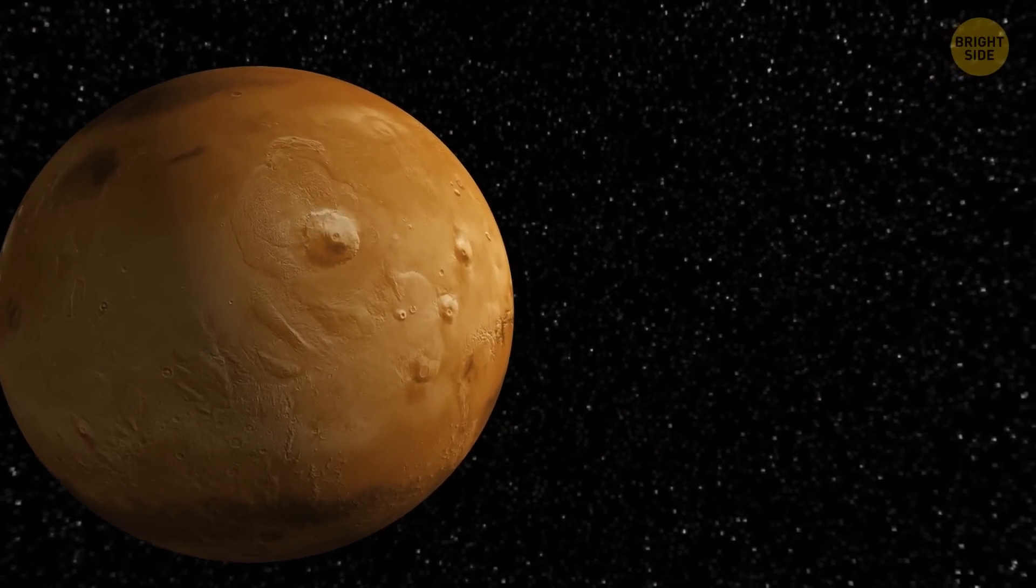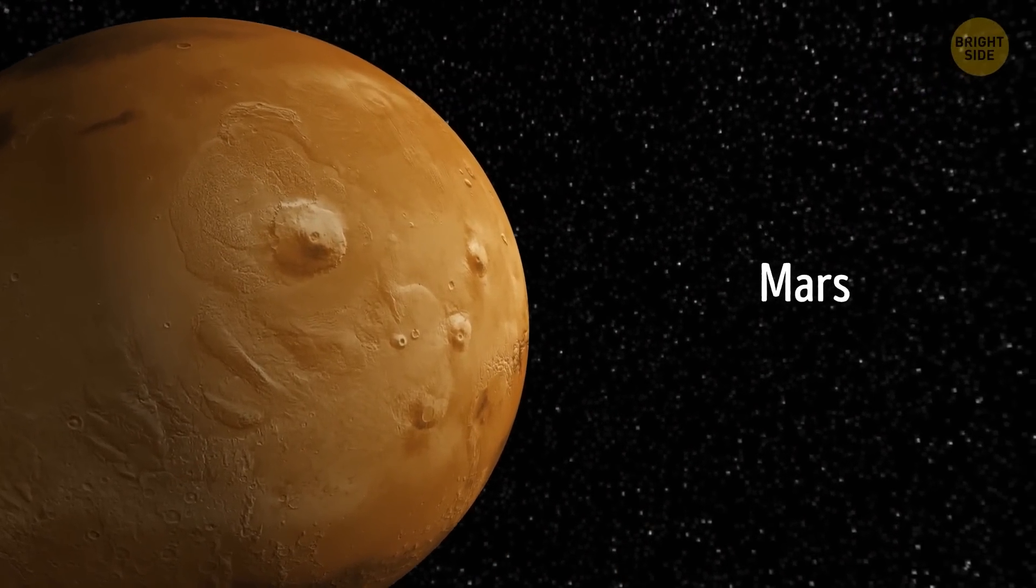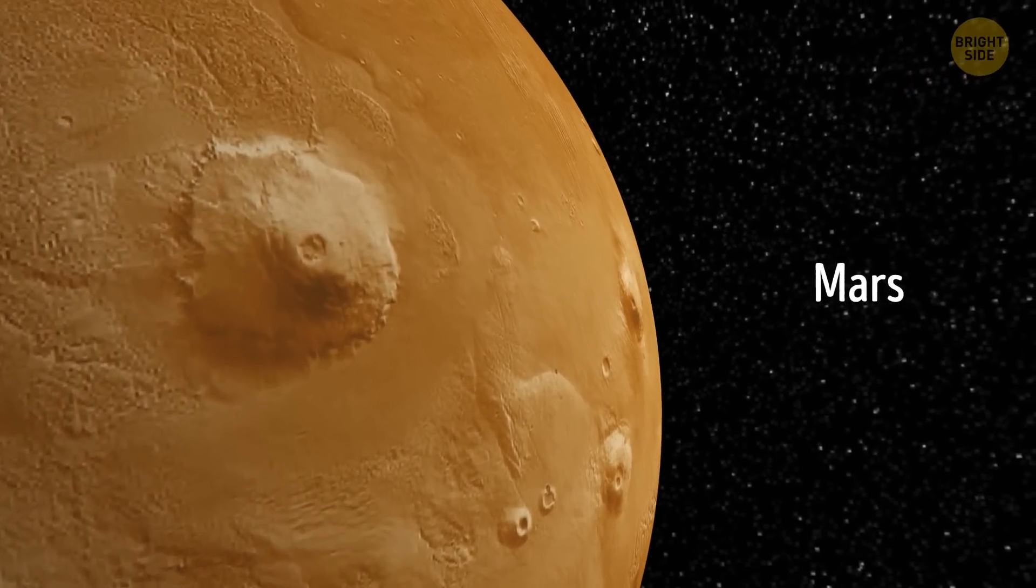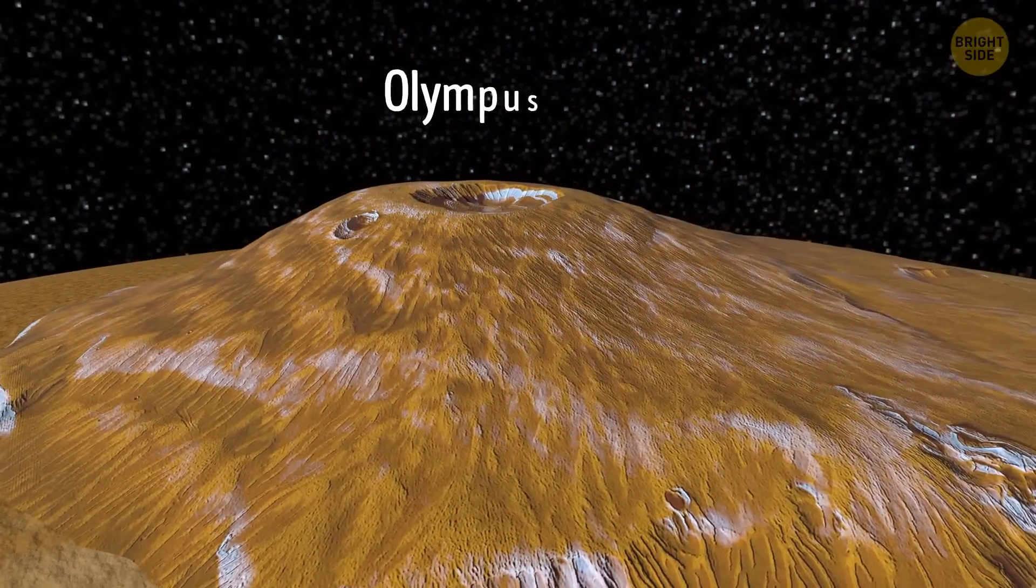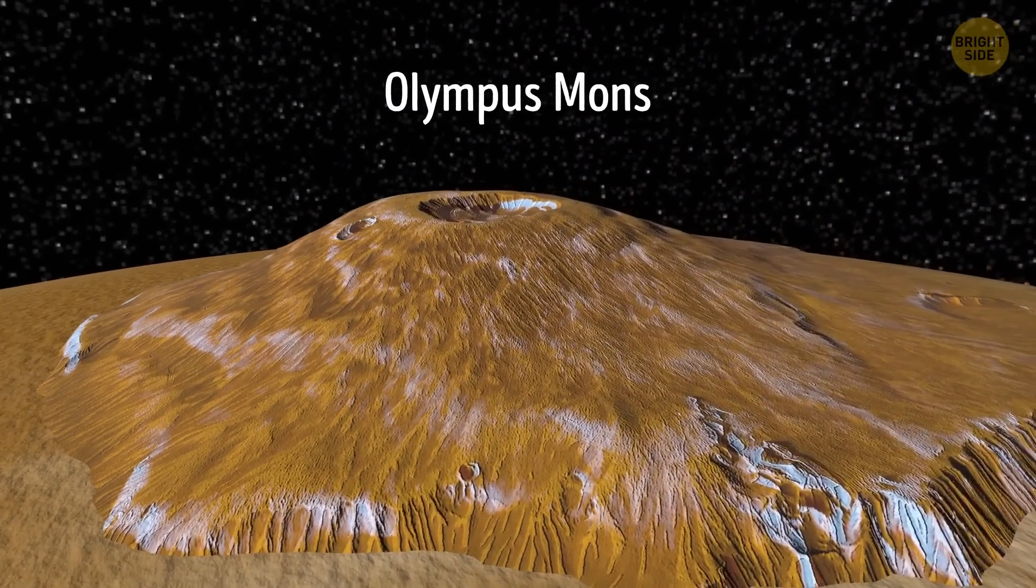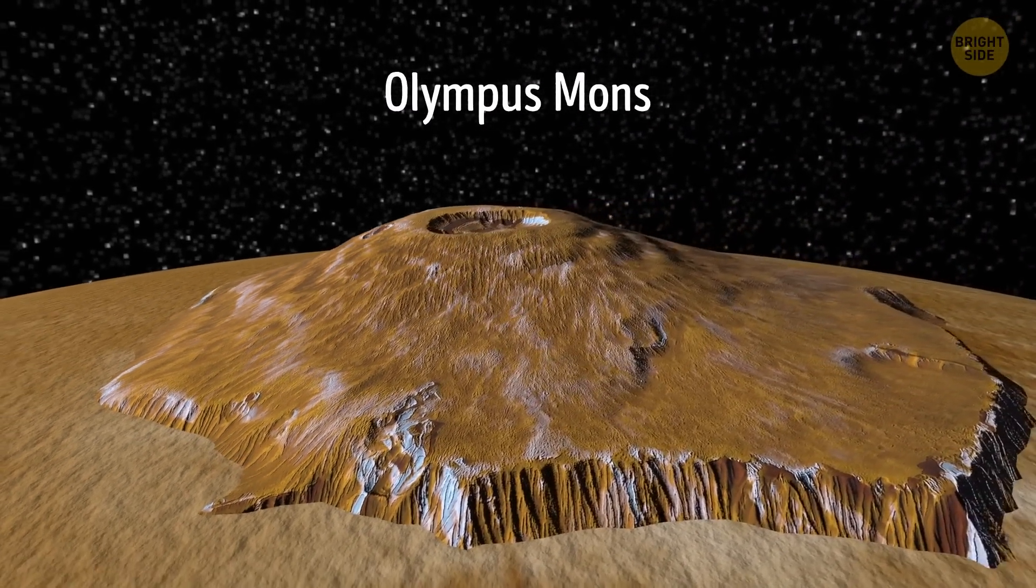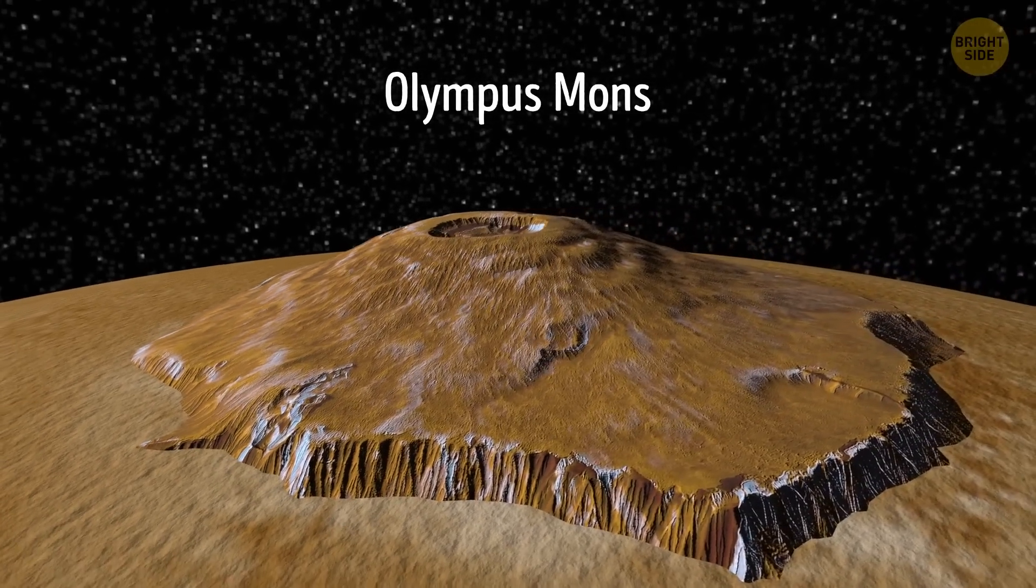The most enormous volcano in the whole solar system, at least that we know of, is on Mars. The size of this monster is almost as great as the state of Arizona, and its height is as big as that of Mount Everest. How did it grow this huge? The answer is simple. There's much less gravity on Mars in comparison with our planet.